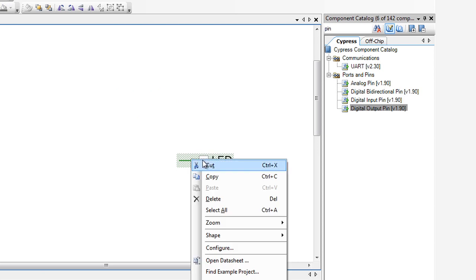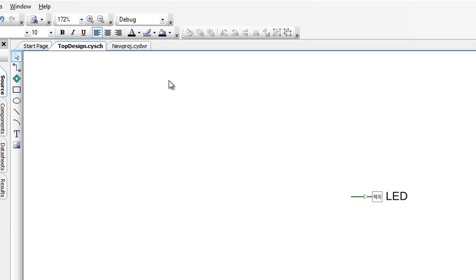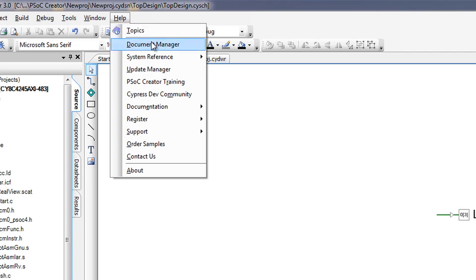I can't stress enough that the component datasheets really are your go-to documents when designing with PSOC Creator. You can get to them from many places, including the configure dialog, the context-sensitive right-hand menu on the component, the component catalog, as well as the document manager.